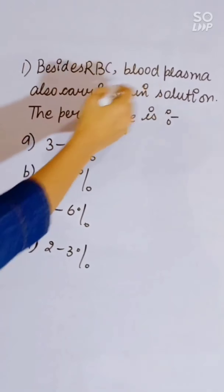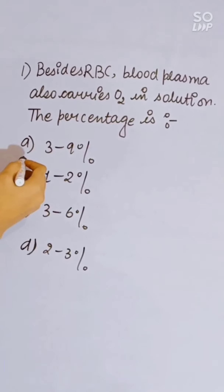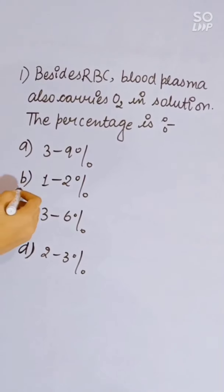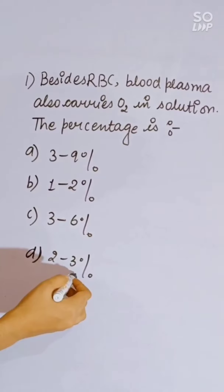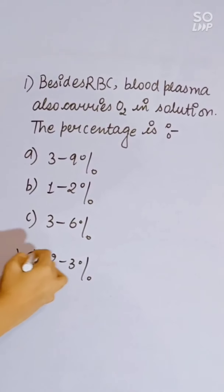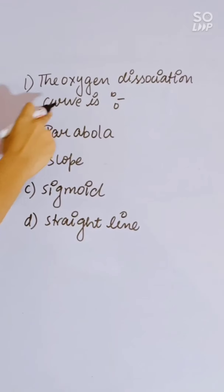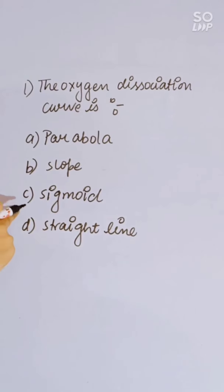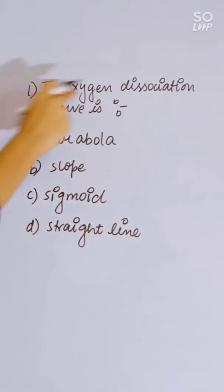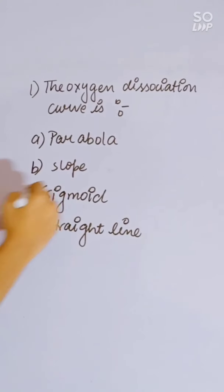Besides RBC, blood plasma also carries O2 in solution. The percentage is: 3-9%, 1-2%, 3-6%, or 2-3%. Current answer is 2-3%. The oxygen dissociation curve is: parabola, slope, sigmoid, or straight line. The oxygen dissociation curve is sigmoid. Correct answer is sigmoid.